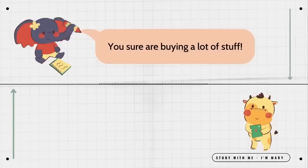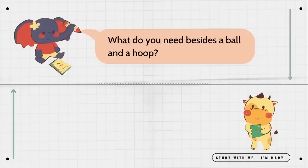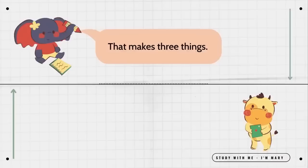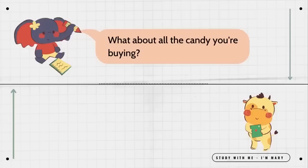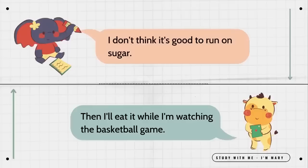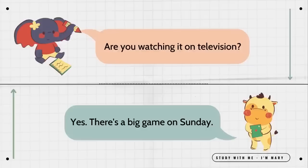You sure are buying a lot of stuff. It's all the equipment I need for basketball. What do you need besides a ball and a hoop? All good players have a good pair of shoes. That makes three things. You should also wear comfortable clothes when you play. What about all the candy you're buying? A player has to stay energized. I don't think it's good to run on sugar. Then I'll eat it while I'm watching the basketball game. Are you watching it on television? Yes, there's a big game on Sunday.